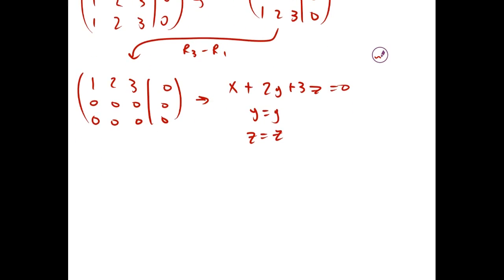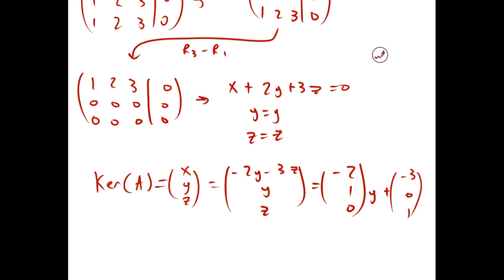So, the kernel of A is equals this set of x, y, z that maps to 0, which equals minus 2y minus 3z, y, and z, which we can also write as negative 2, 1, 0, times y plus negative 3, 0, 1, times z.